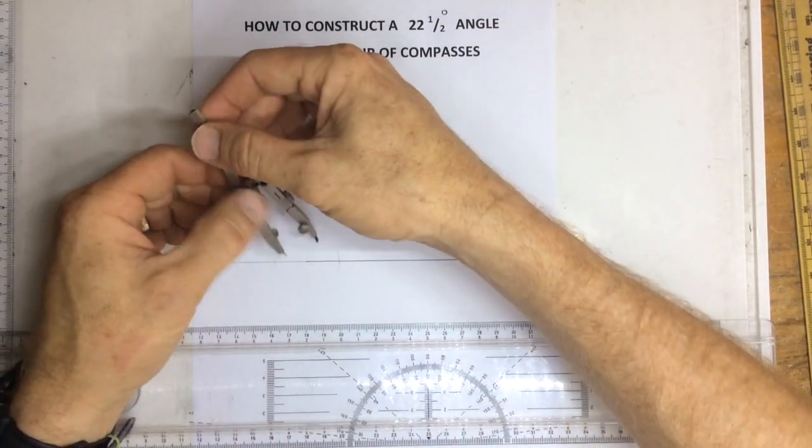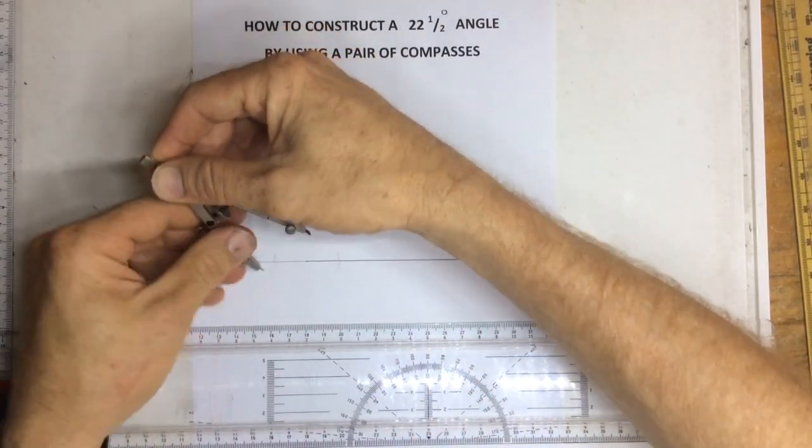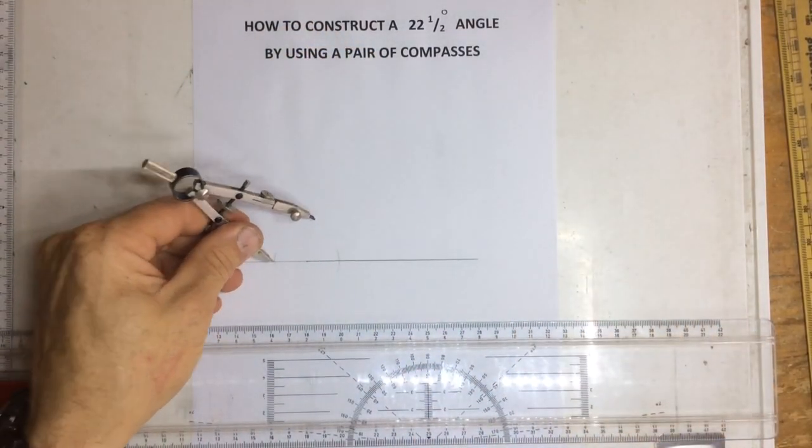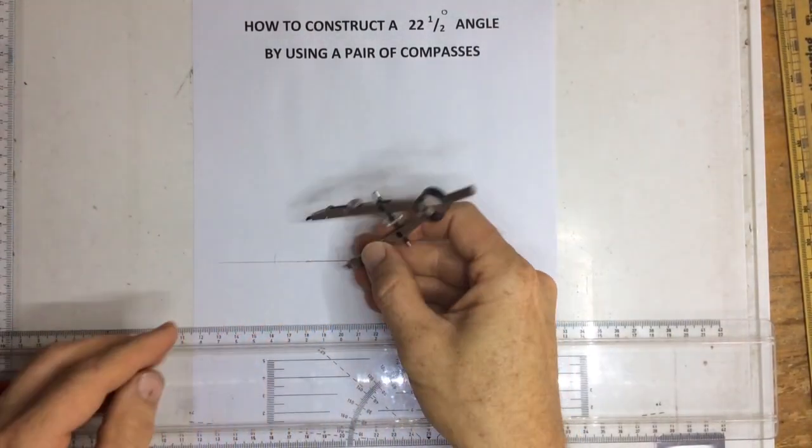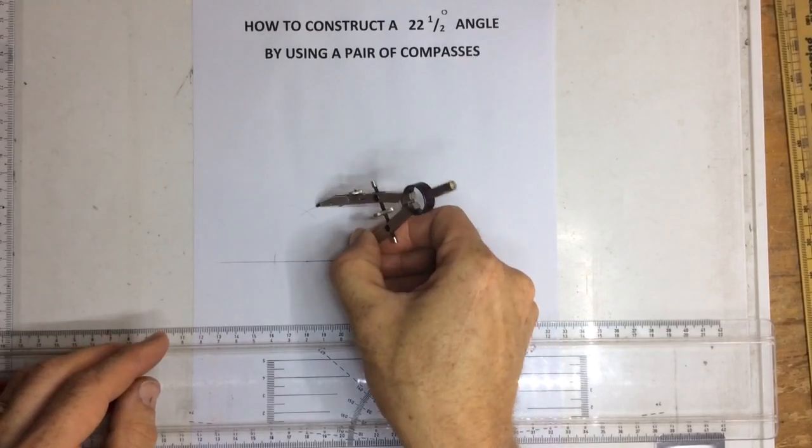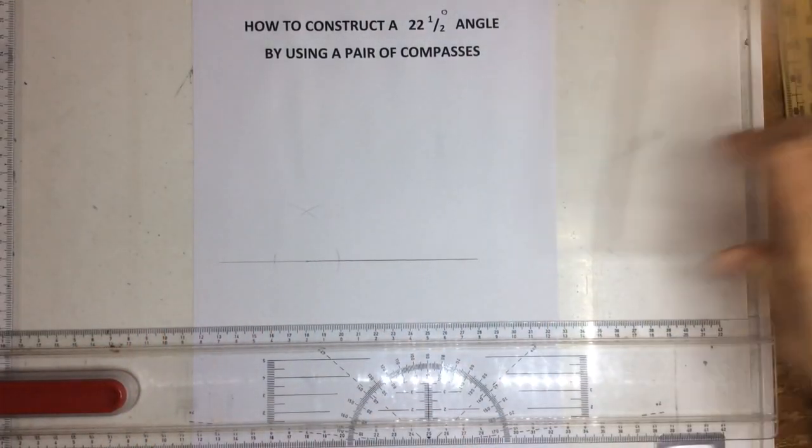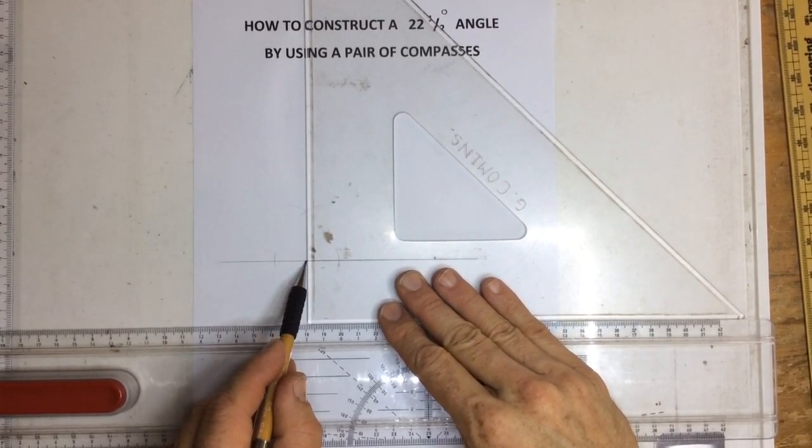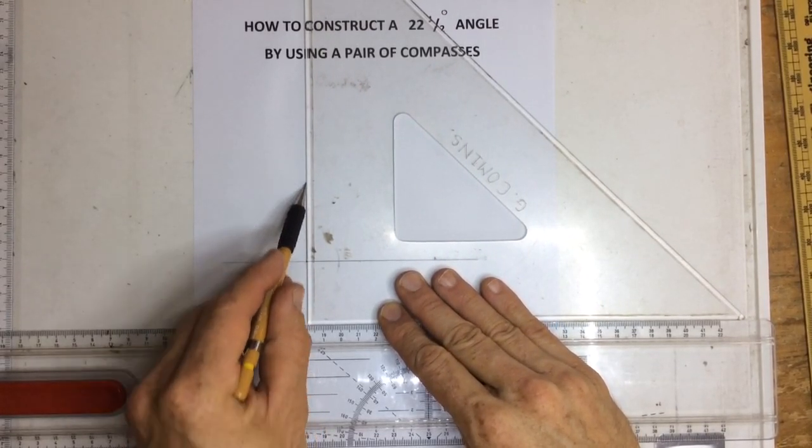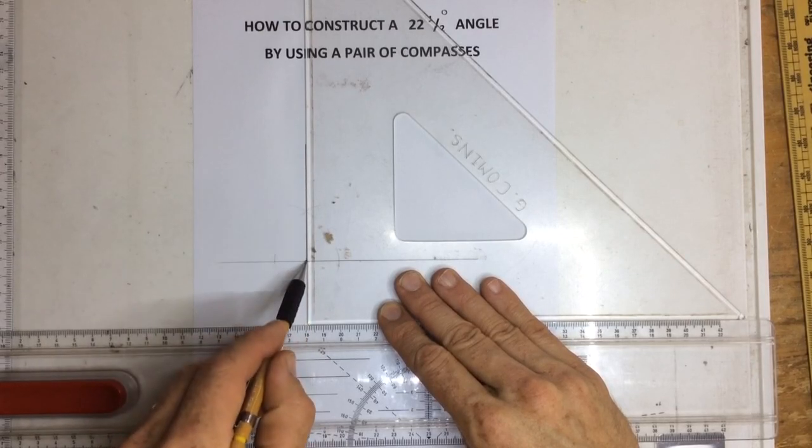I then extend that pair of compasses and I draw from that point an arc, go to that point over there, draw an arc, and if I take a line from this point over here, going up through those arcs, that will give me a 90 degree angle.